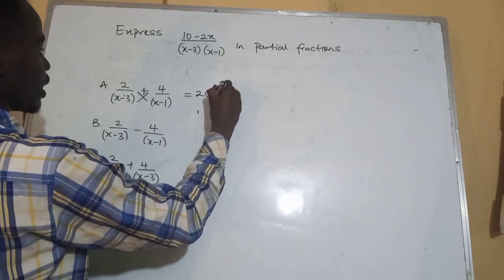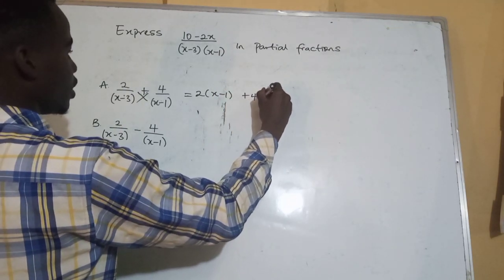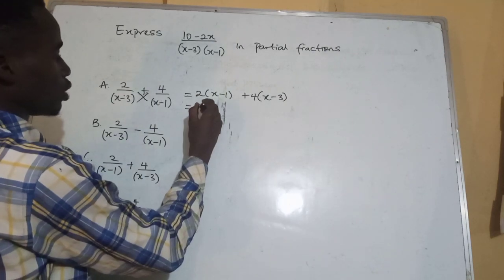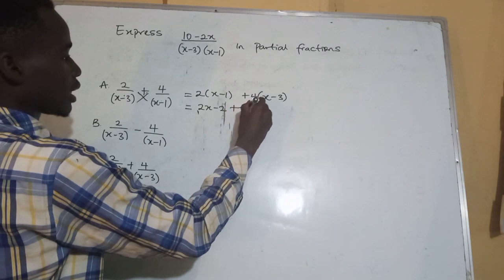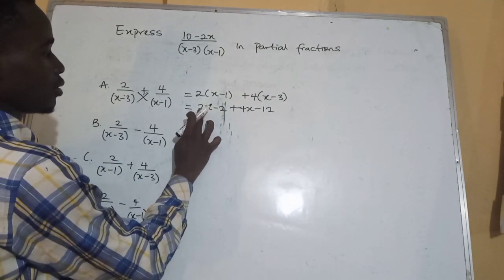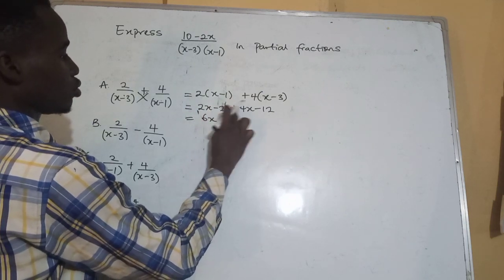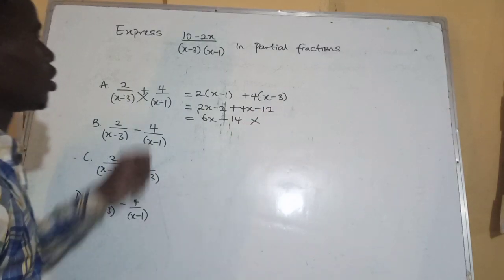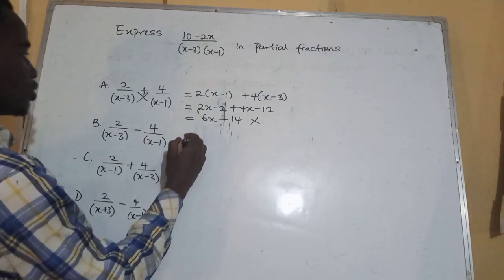We have 2(x minus 1). You should be fast on the day of an e-test because there's not much time. So we open the bracket: 2x minus 2 plus 4x minus 12. Collecting like terms, we have 2x plus 4x = 6x, minus 2 minus 12 = minus 14. So this is wrong because it did not bring us back to the numerator.